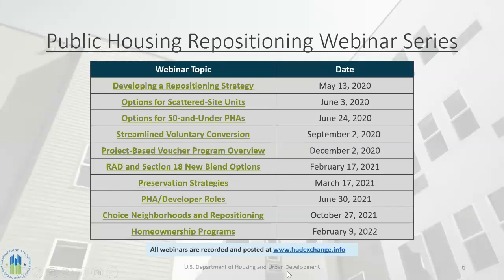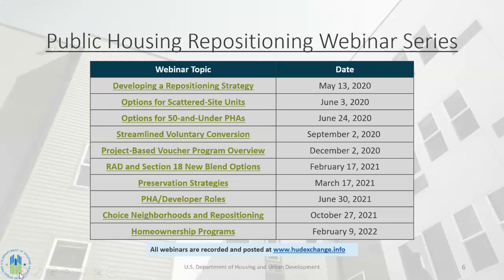This slide describes past webinars in this series that focused on the repositioning tools. If you're considering one of these repositioning tools like RAD, Streamline Voluntary Conversion, or Section 18 — another kind of preservation strategy through moving to a Section 8 platform — we encourage you to check out those past webinars. If you want more information or technical assistance, please reach out to the emails listed later in this presentation or contact your field office rep to request a repositioning panel call with the headquarter SMEs. Also stay tuned for future webinars, including a RAD update and a Faircloth to RAD webinar later in the summer.